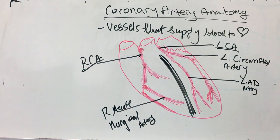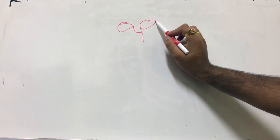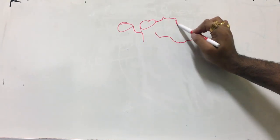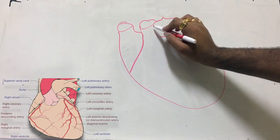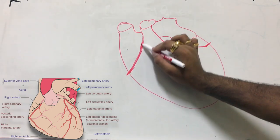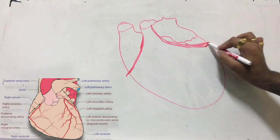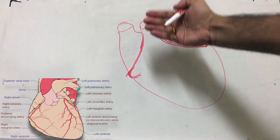Now we're going to erase all of this and hopefully draw a slightly better heart for the posterior view. We know the right and the left coronary arteries. The left coronary artery goes in the back too, and this is how it kind of goes and becomes the circumflex. So this is the right coronary artery as we went over earlier, and this is the left coronary artery. Now we're talking about it on the posterior level.